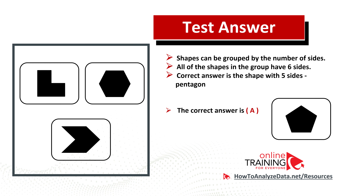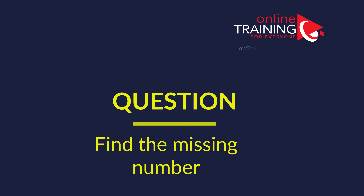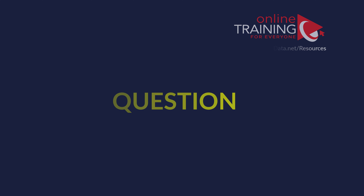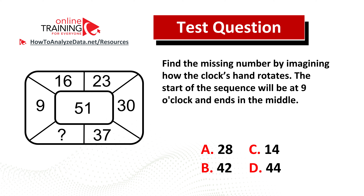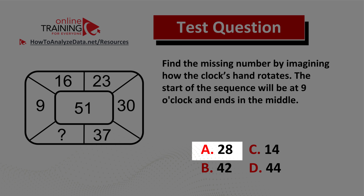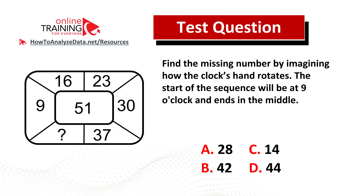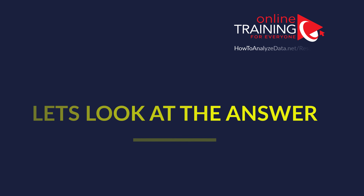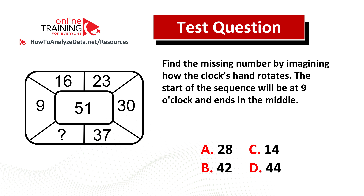Hopefully you've nailed that question and now know how to answer similar problems on the test. Here's the next question from the real assessment test: find the missing number by imagining how the clock's handle rotates. The start of the sequence is at nine o'clock and it ends in the middle. Choices are: choice A, 28; choice B, 42; choice C, 14; and choice D, 44.